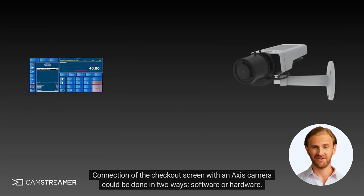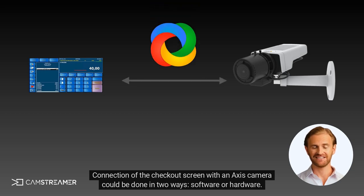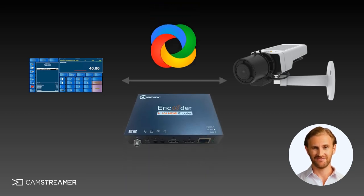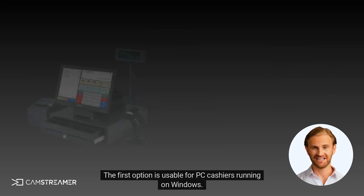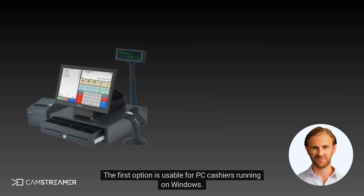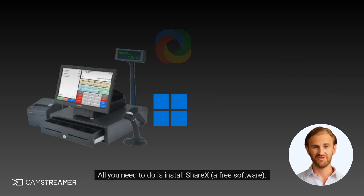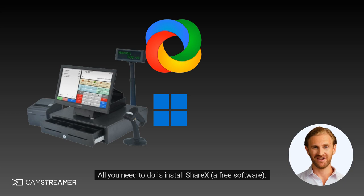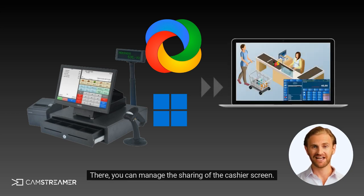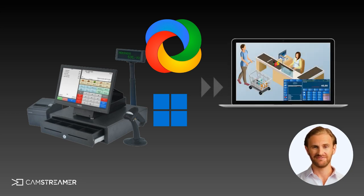Connection of the checkout screen with an Axis camera could be done in two ways: software or hardware. The first option is usable for PC cashiers running on Windows. All you need to do is install ShareX, a free software. There, you can manage the sharing of the cashier screen.